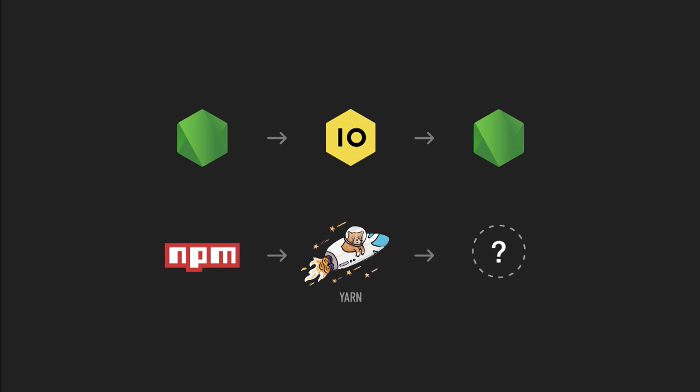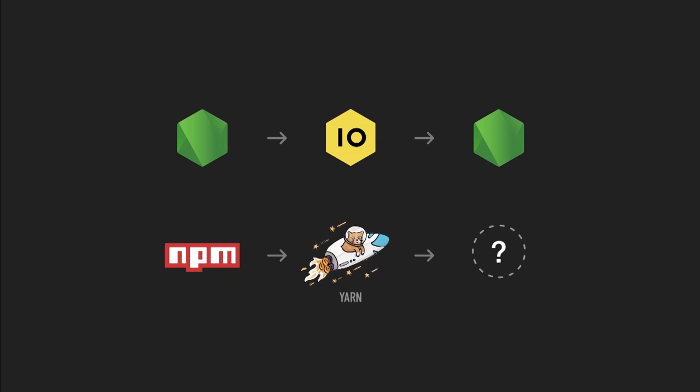With NPM, it's kind of a different story. We recently saw Google and Facebook release Yarn, which is not a fork of NPM but the motivations for creating it were similar to the motivations for creating IOJS — there was not enough innovation in the NPM client. Now we have a choice: we can use NPM or Yarn, and we're seeing more and more innovation in this space.